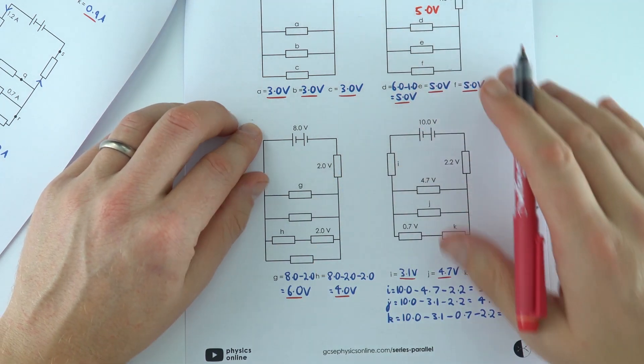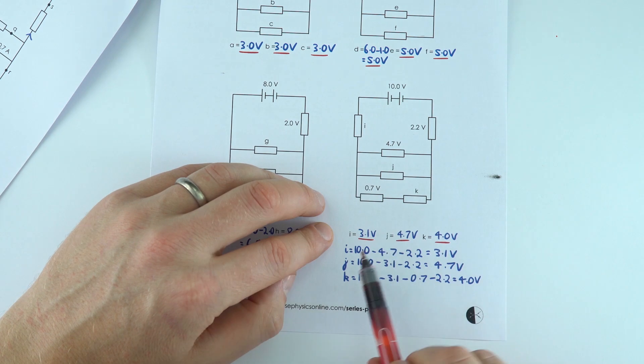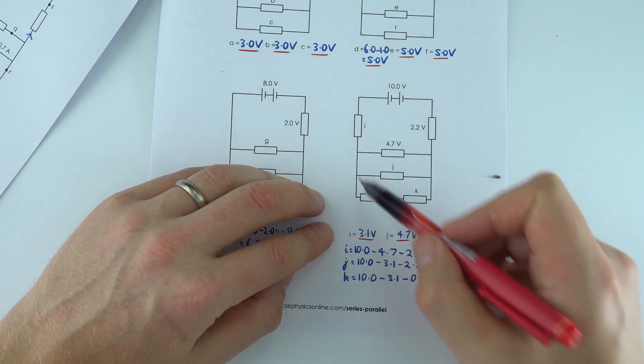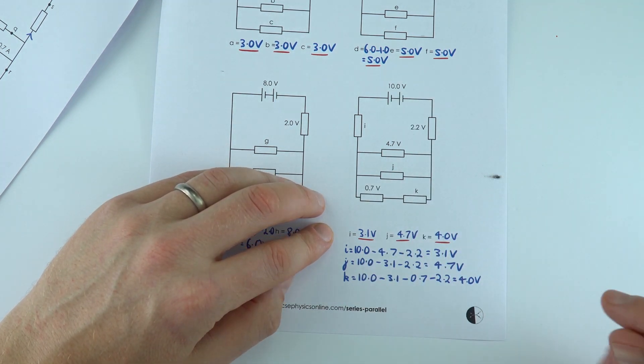And again in a similar method these are my answers, and I did it by working out around each individual loop the values for I, J and K.